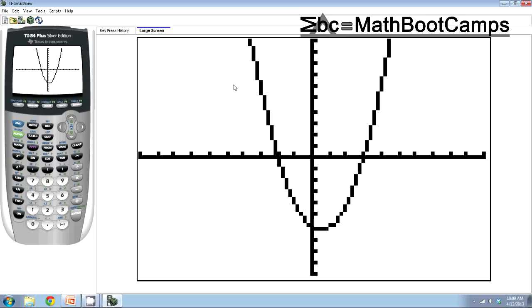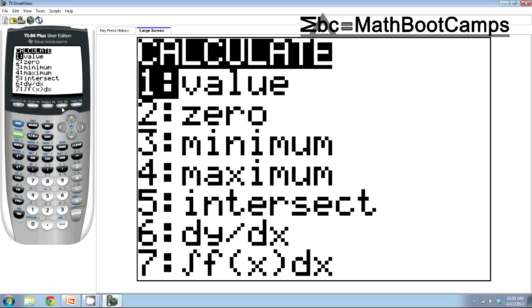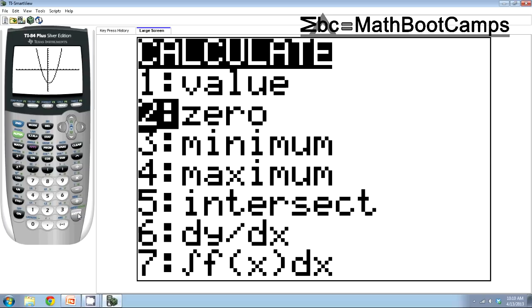Okay, now once I have a decent picture, what I'm going to go to is second and trace. This takes me into the calculate menu. And so there's a couple different ways you could do this. Notice that we have the word zero here. Another way to think about the x-intercepts is that they're also the zero of the function. So that's what I'm going to use, is go to the zero.